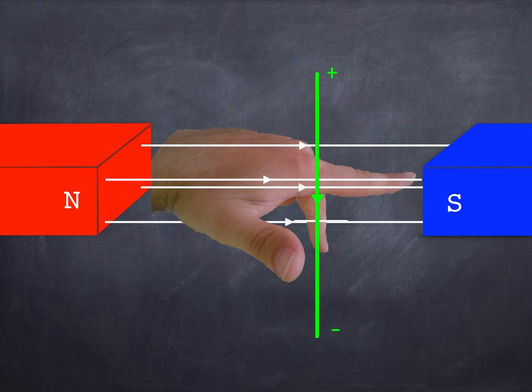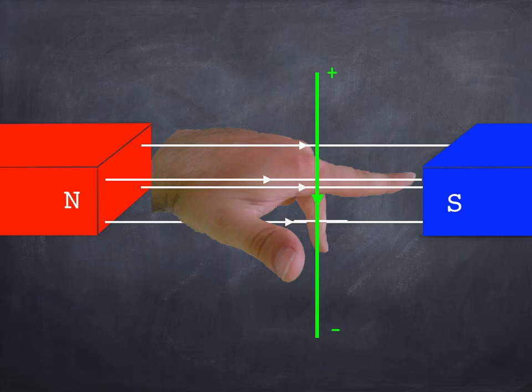A couple of common mistakes people make with this. Number one, it's called Fleming's left hand rule. It doesn't work with your right hand. So just make sure you are using the correct hand. Secondly, you can move the paper around on your desk. You don't have to keep the paper still. Otherwise you end up dislocating wrists, pulling shoulders out of joint. It's really not worth it. Just think about rotating the paper a little bit. It does make your life a lot easier.